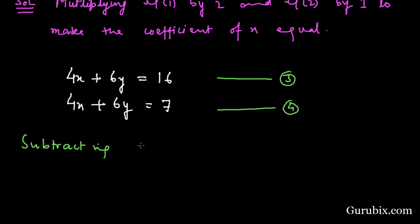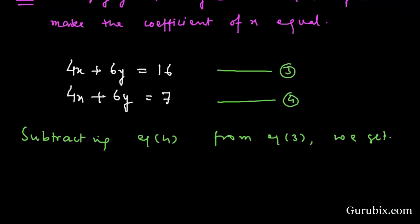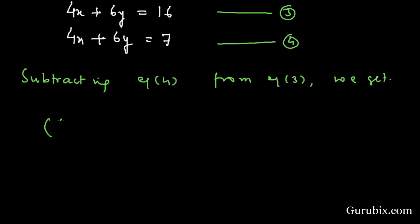Subtracting equation number four from equation number three, we get 4x + 6y minus 4x + 6y equals 16 minus 7. These values will cancel, so it equals 0, and here we have 9.